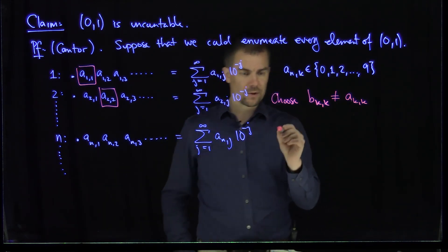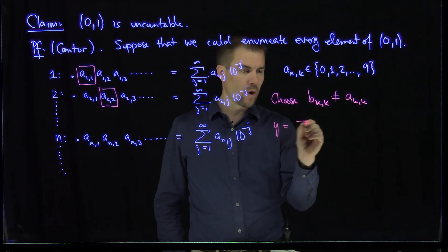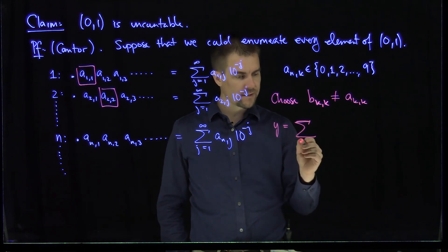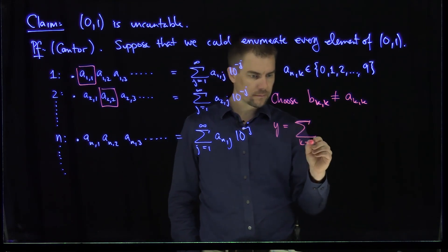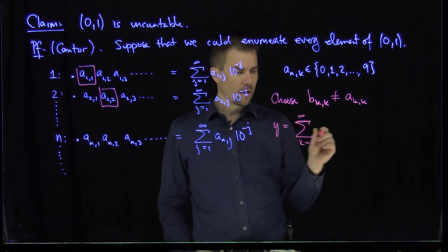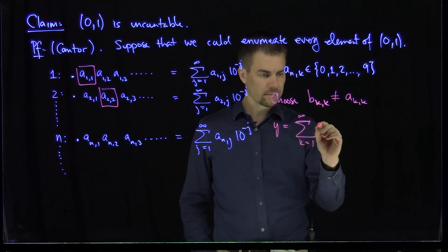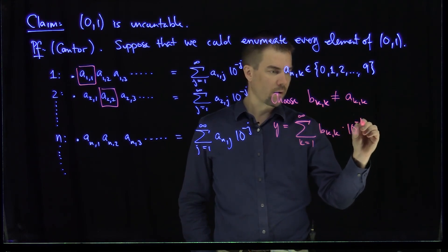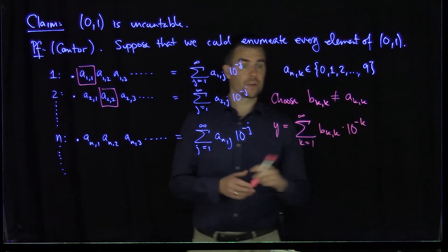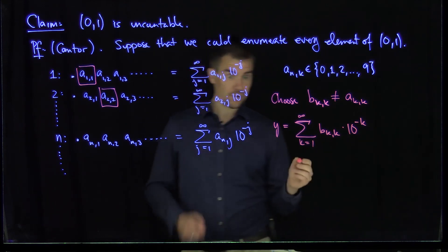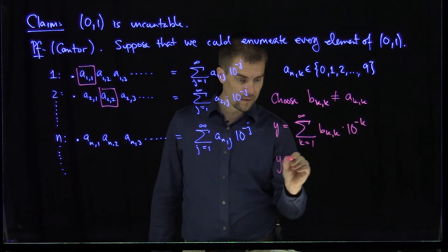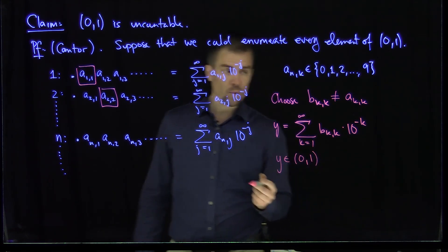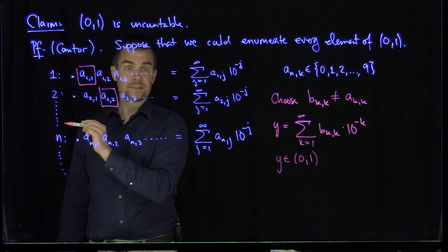So what I can do then is consider this number y, which is the sum k goes from 1 to infinity of these numbers b_k_k times 10 to the power negative k. This element is a decimal expansion, so y is an element of the interval 0 to 1. And y is not equal to any of the things in the list.